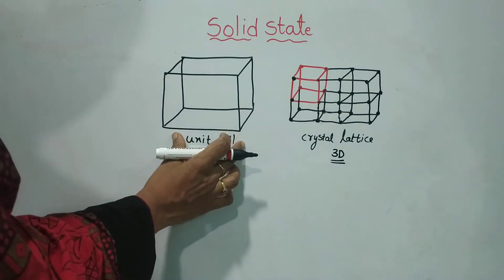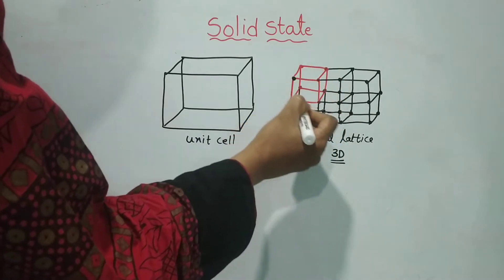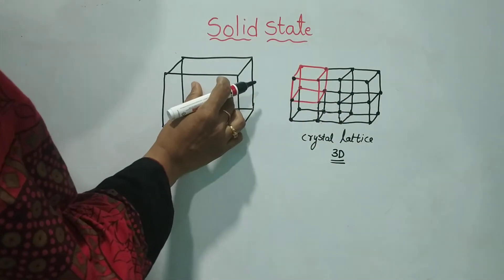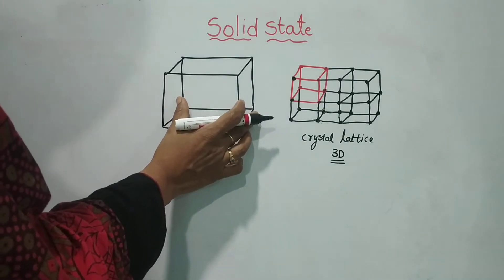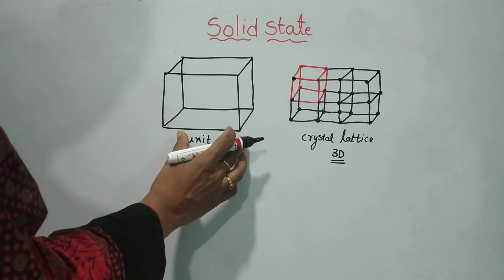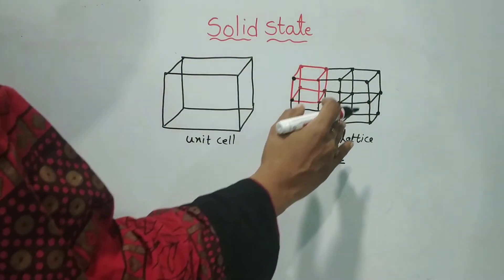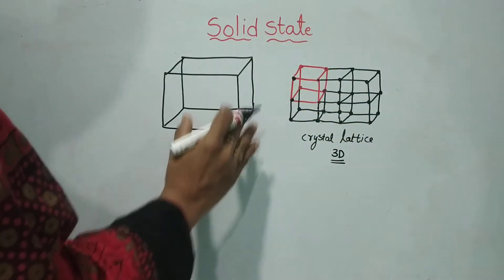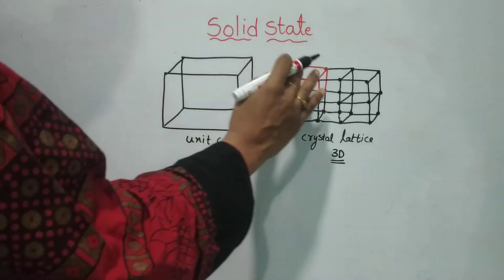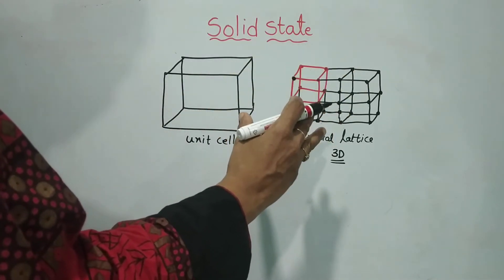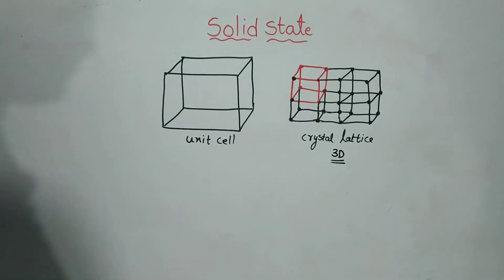What is a unit cell? Unit cell means the smallest portion. As you can see here, there is one unit cell. This is the smallest portion of a crystal lattice, repeated in 3D. From this repeated pattern, you can generate a crystal structure. You can create a crystal structure from a small unit cell. So this is the unit cell, and this is the crystal lattice.